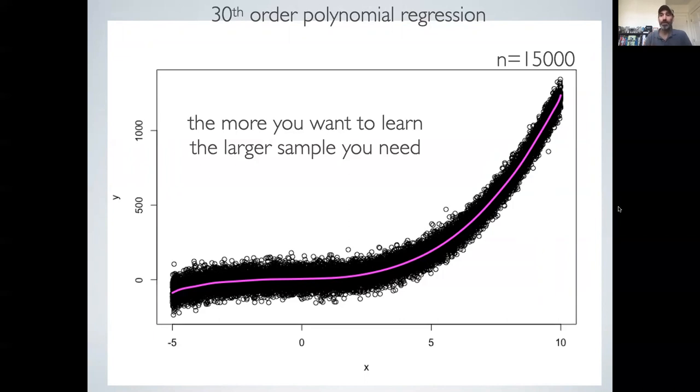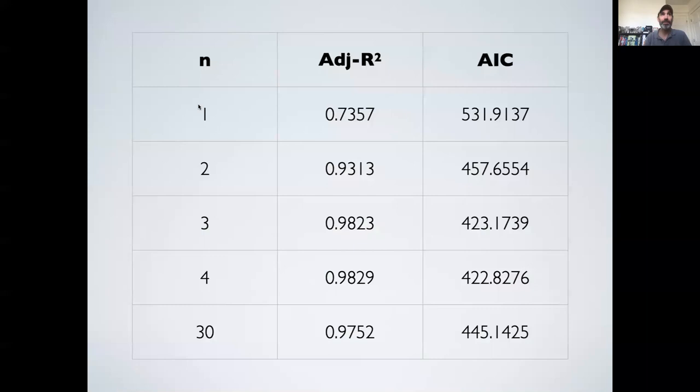So jumping back to our original smaller sample size, we can now look at the five models we considered, polynomials from one to four, and then jumping to 30. We can see a consistent pattern of our R squared going down. And we can see that initially our AIC goes down, then it kind of levels off. And then our 30th order polynomial, the AIC has gone back up again.